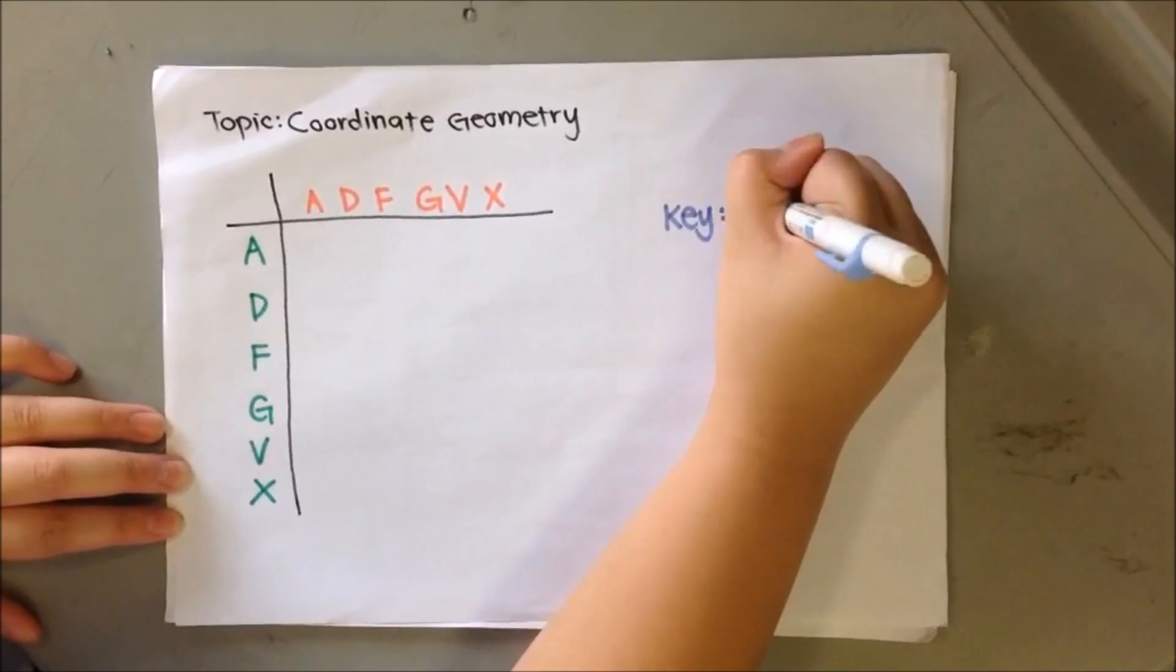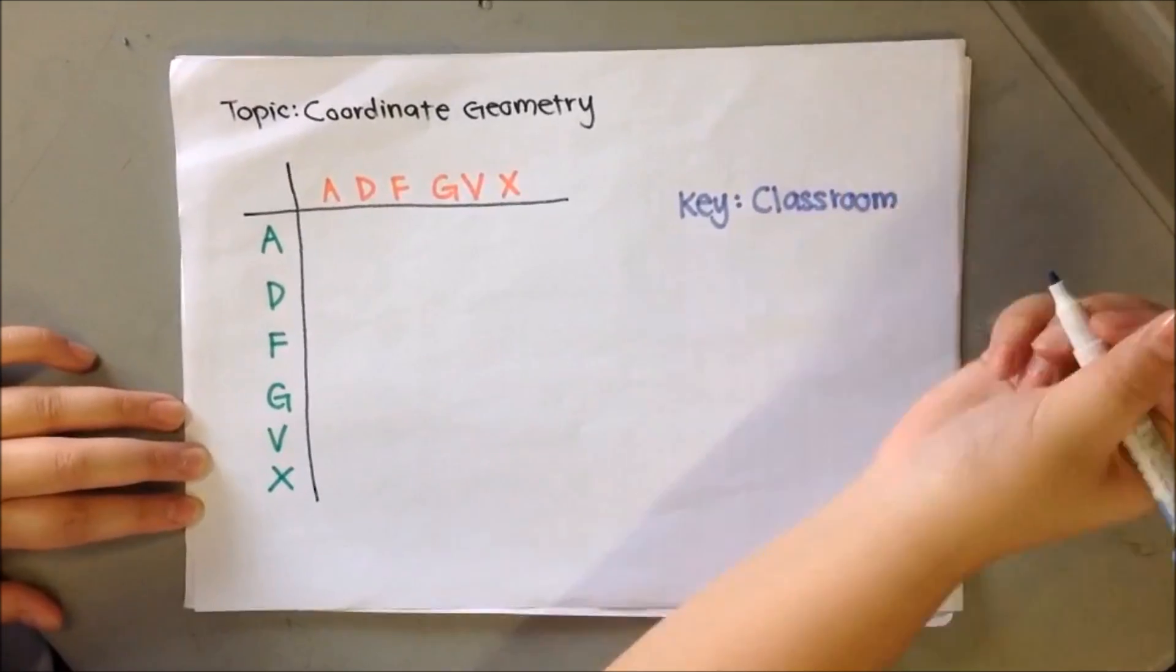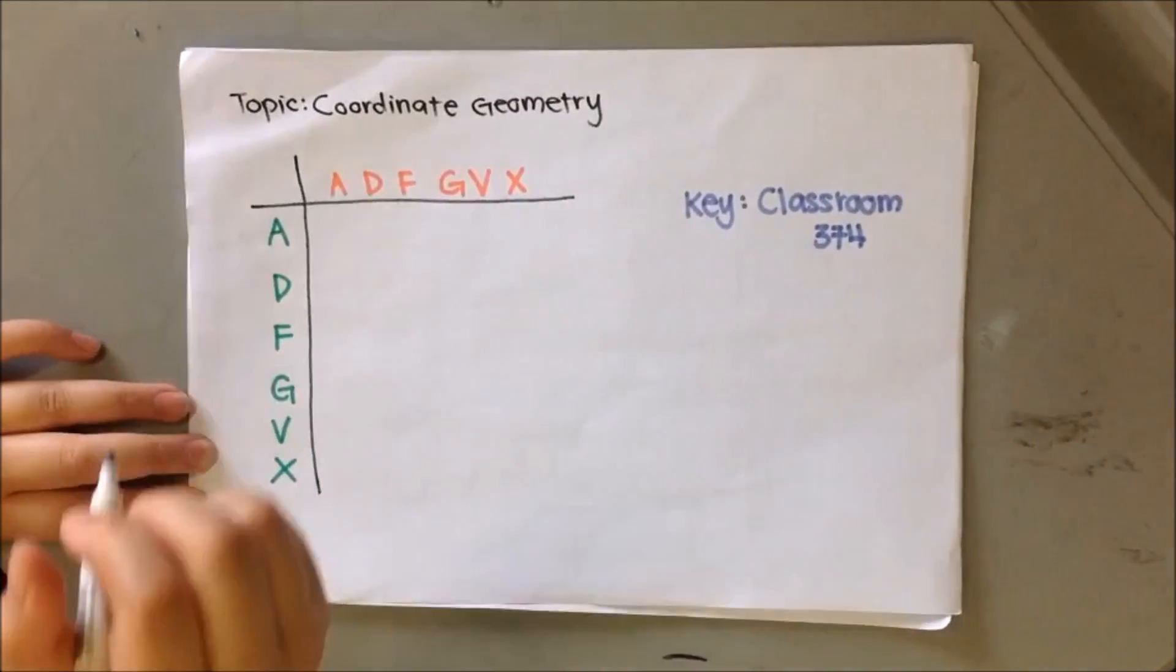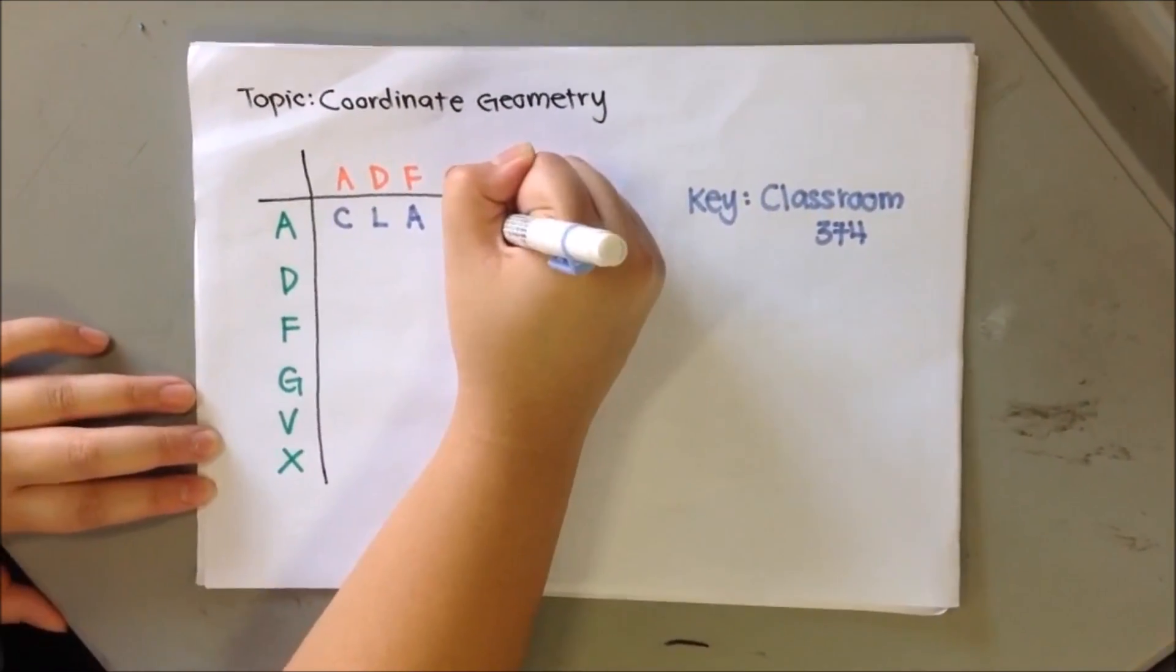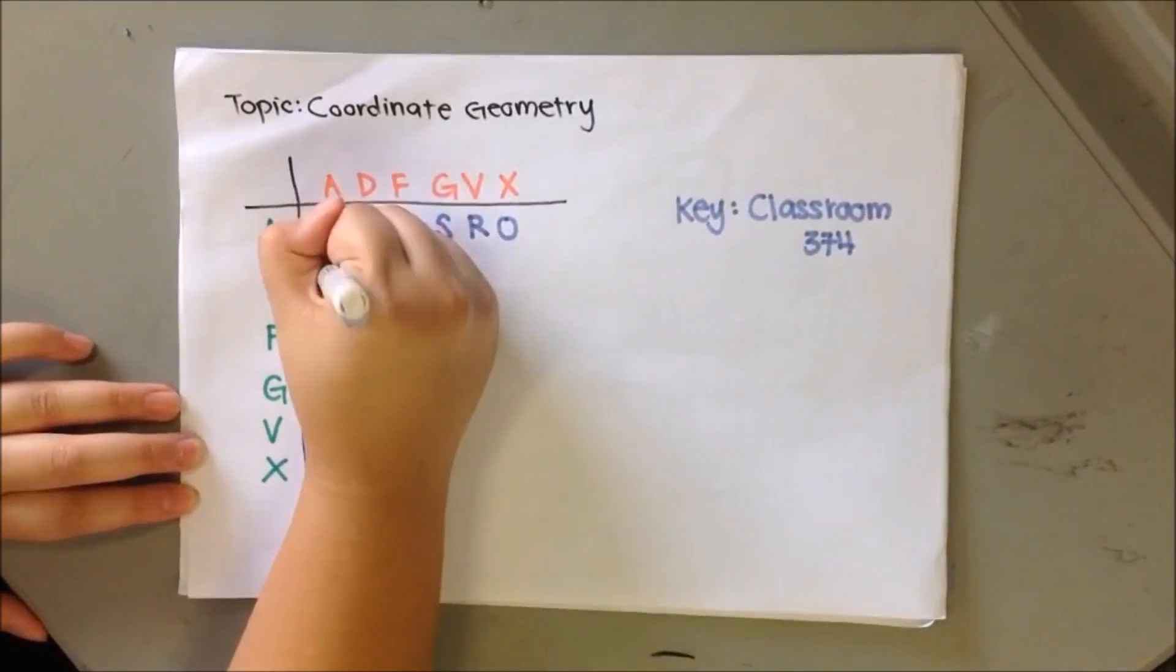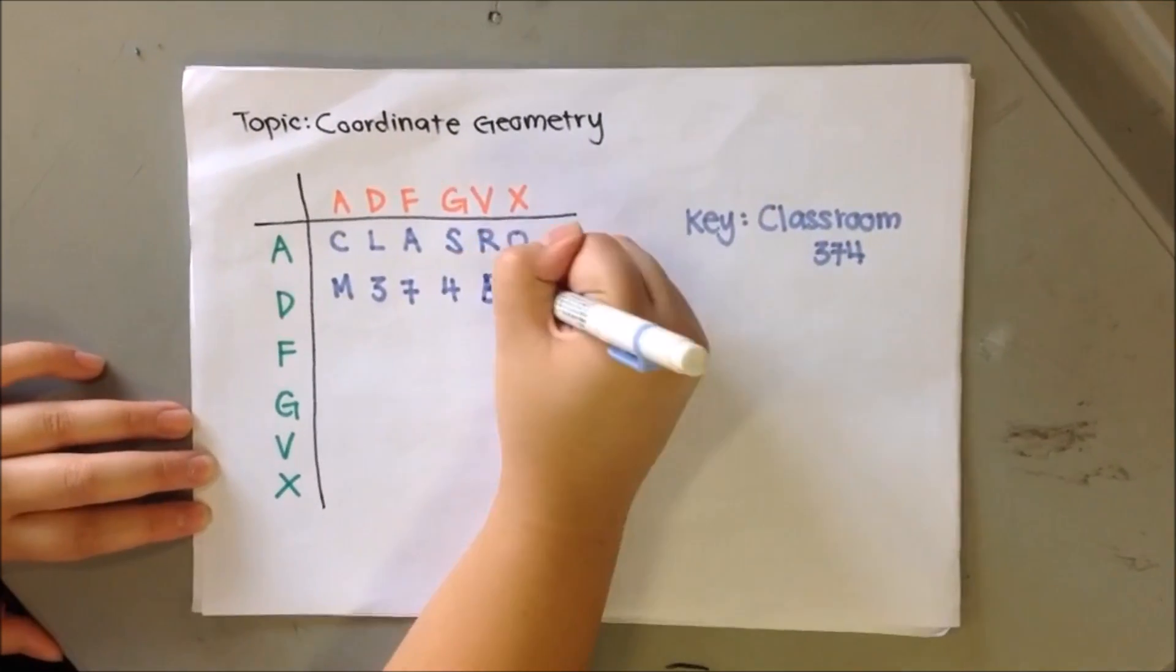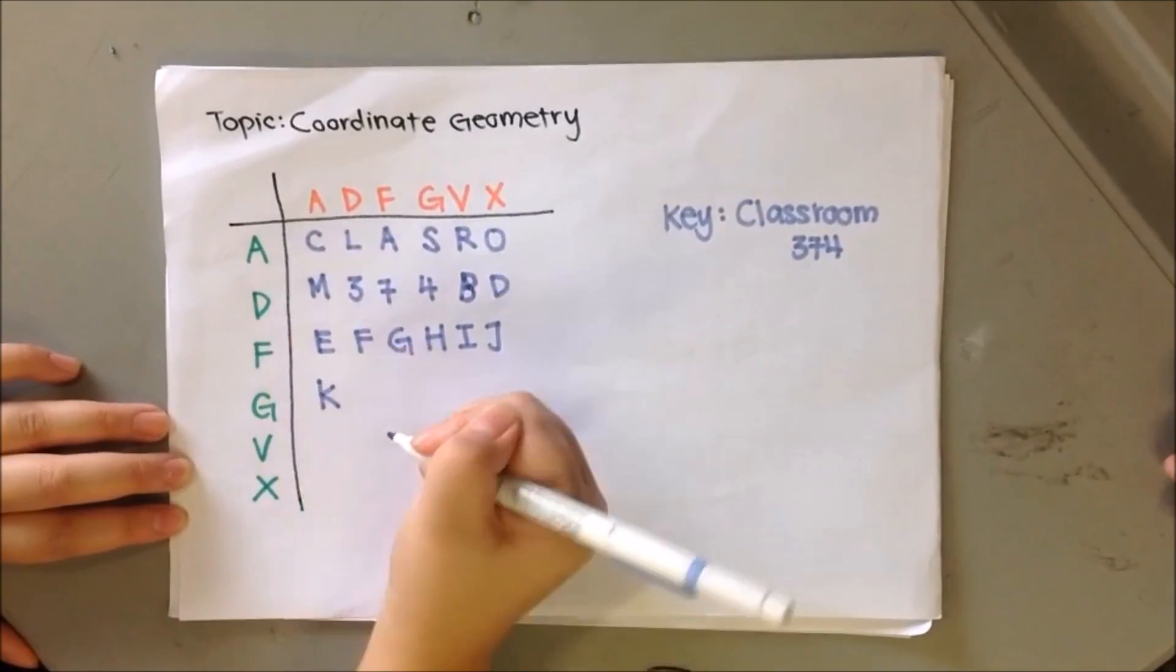Like most cyphers, a key will be given. The key will help one solve the encrypted message. Let's take for example, the key given is Classroom 374. Fill in the letters in the key in the template first. Skip every repeating letter and write the next. After the key has ended, fill the remaining with letters then numbers chronologically.